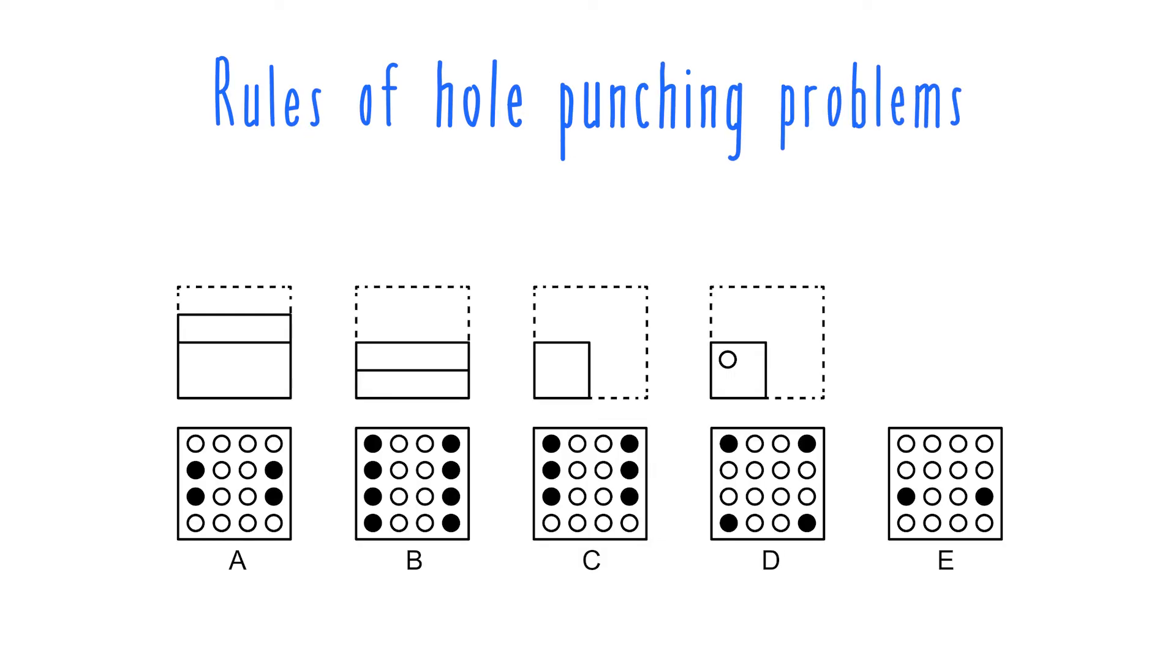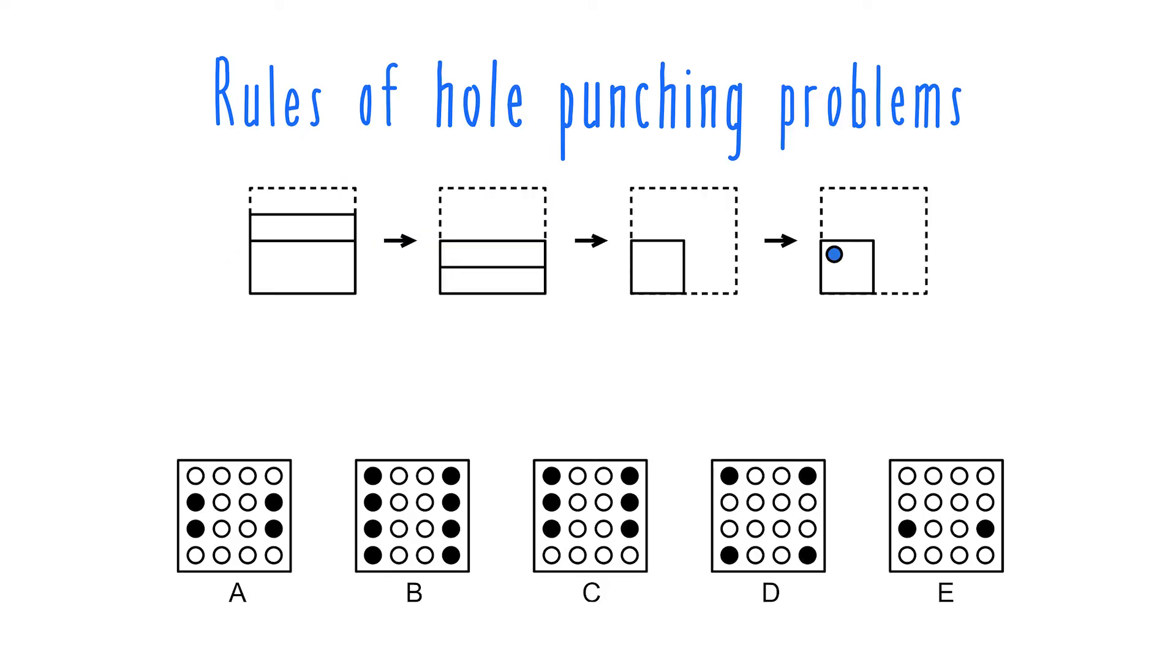First, let's go over the basic rules of hole punching problems. During a hole punching problem, you're given a paper folding sequence. It will show you one or more sequential folds in a square piece of paper, followed by a hole punch. To answer these correctly, you have to pick the pattern of holes that would result if you then unfolded this paper.